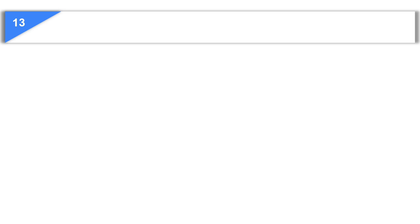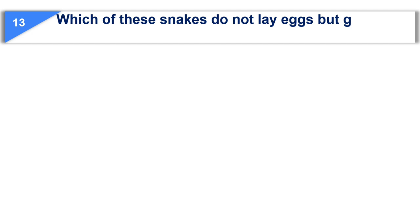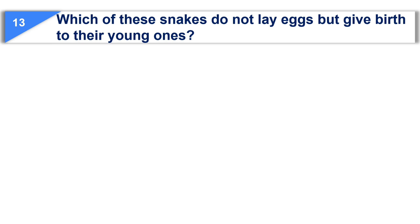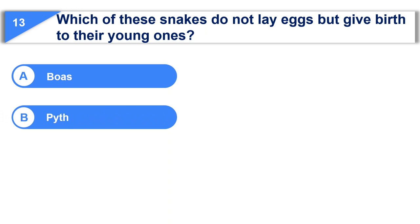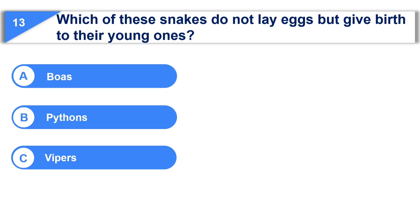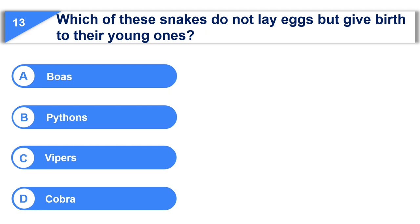Moving to the next question. Which of these snakes do not lay eggs but give birth to their young ones? Option A, boas. Option B, pythons. Option C, vipers. Option D, cobra.